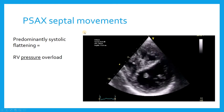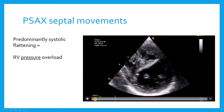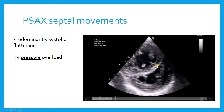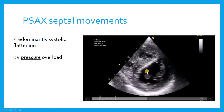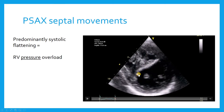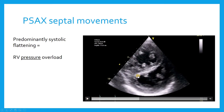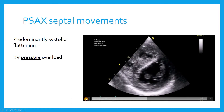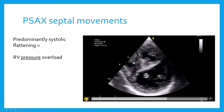This is from a parasternal short axis view. We are looking at more significant flattening during systole in this patient. There is some flattening during diastole as well, seen at the end of the clip — this is still a little bit of a D-shaped left ventricle or flattened septum. But clearly there is very significant flattening during systole, which is really more of a right ventricular pressure overload phenomenon.